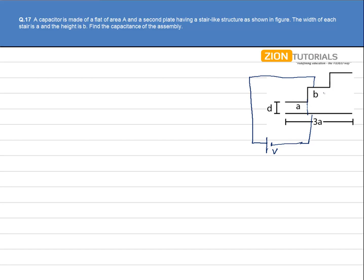This is one capacitor, this is another capacitor, and this is another capacitor. Let us name them as C1, C2, and C3.